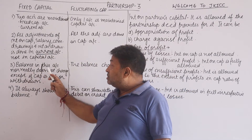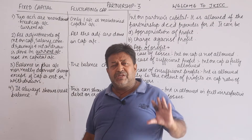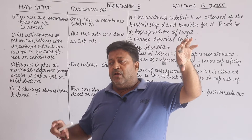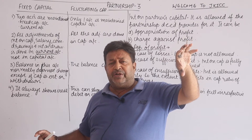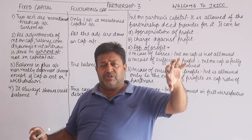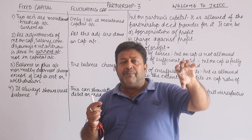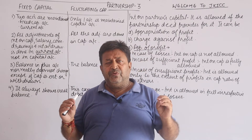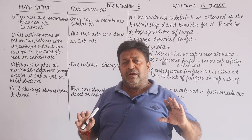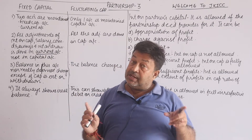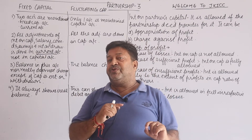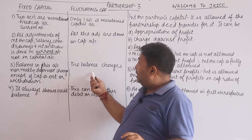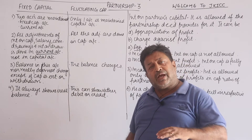The balance in a fixed capital account normally does not change. Fixed means that if the starting capital is, say, 40,000, the opening and closing balance remain the same. This changes only in very few cases — when capital is permanently introduced or withdrawn. So normally, the opening and closing balance will be the same under fixed capital. But in the case of fluctuating capital, this balance will change.